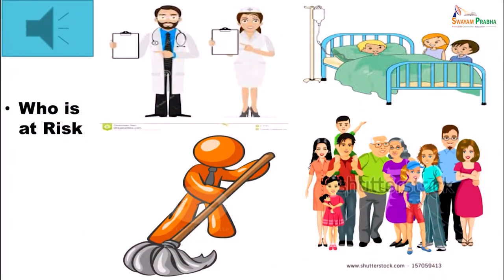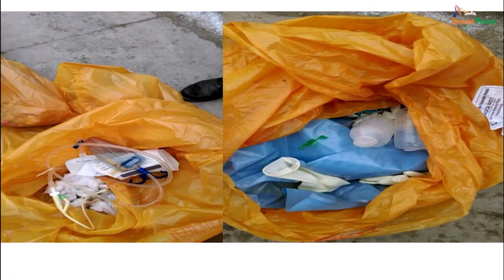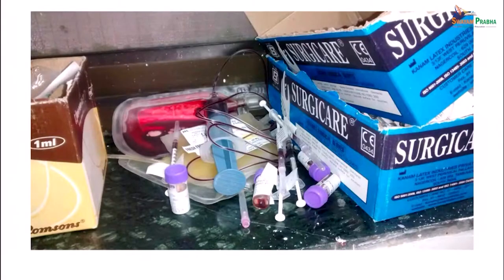Now who is at risk? It could be us — the healthcare workers — it could be the patients, or it could be relatives or people who are visiting these patients or healthcare providers. The waste you can see could be lying around: drips and IV lines which have been disposed of, disposed glasses, disposed gloves, all the IV drips and syringes — all these could be part of this waste.